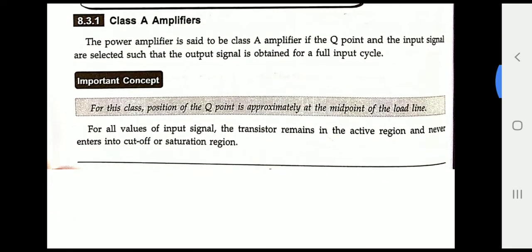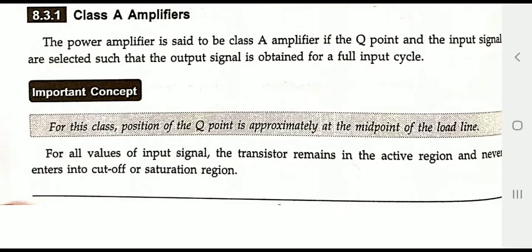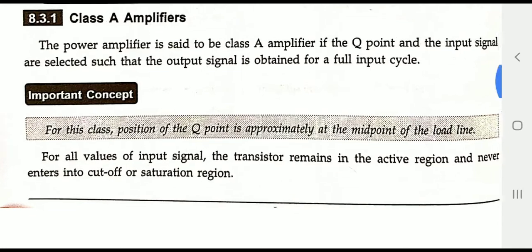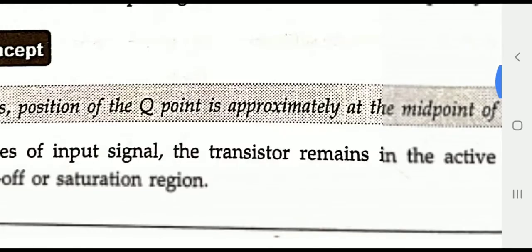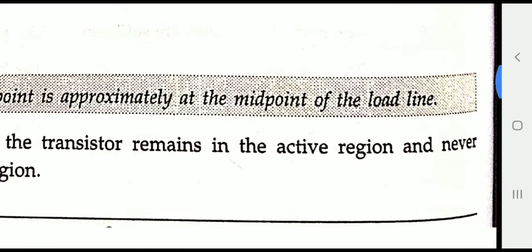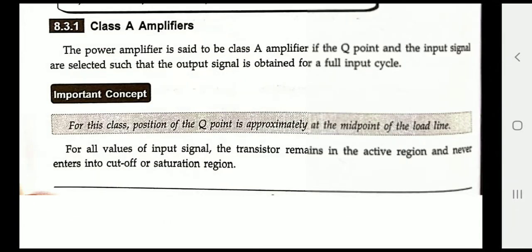First is the Class A power amplifier. We will focus on the definition because all the amplifiers are categorized based on the selection of input and Q point. A power amplifier is said to be a Class A amplifier if the Q point and the input signal are selected in such a way that the output signal is obtained for the full input cycle and the Q point is approximately at the midpoint of the load line. So the complete input signal is selected and the Q point is placed in the active region.